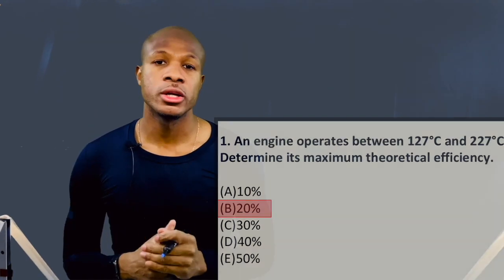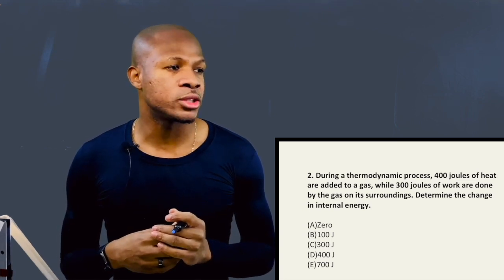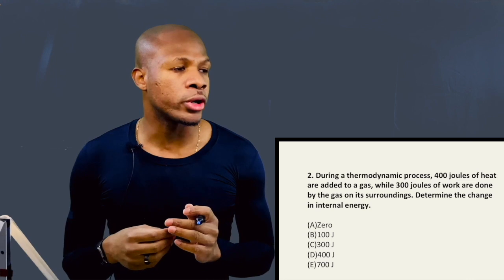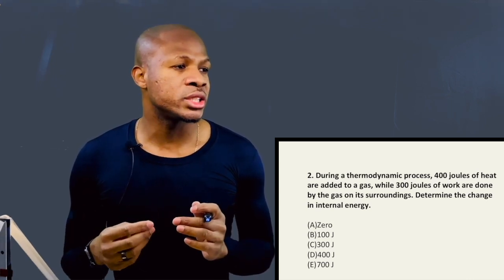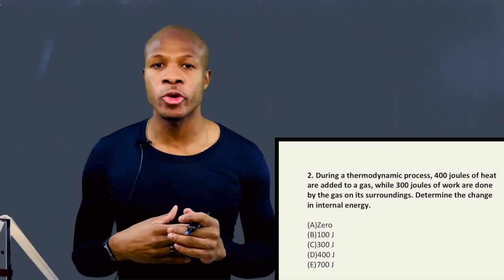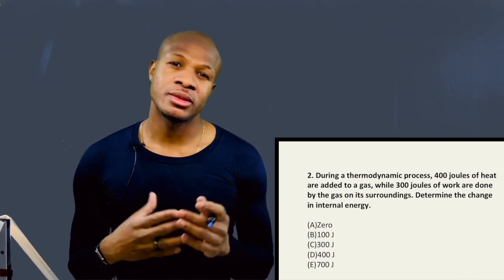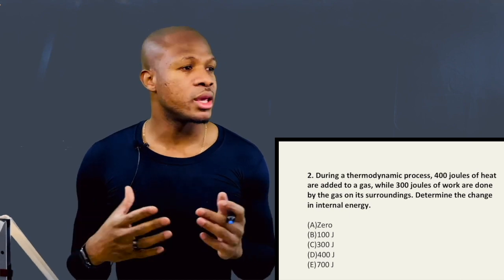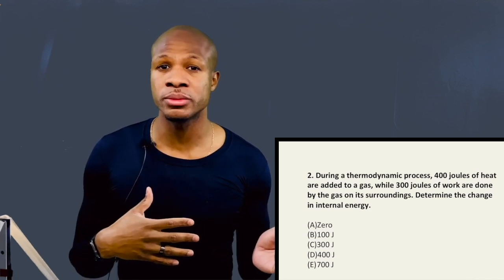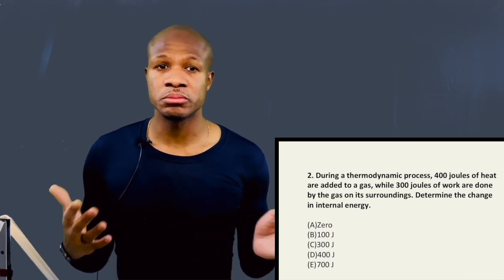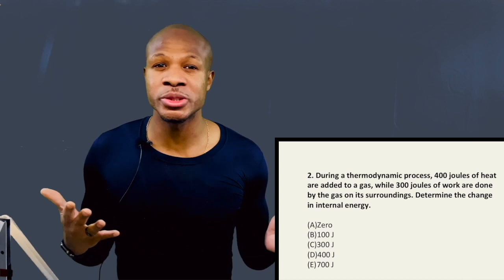Now let's go on to question number two. Question number two states: During a thermodynamic process, 400 joules of heat are added to a gas, while 300 joules of work are done by the gas on its surroundings. Determine the change in internal energy. Very straightforward problem — this gas took in 400 joules of heat and it did 300 joules of work, so you took in 400 but you lost 300. The difference between 400 and 300 is 100 joules. Answer is 100 joules.